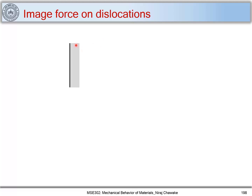Let's consider this surface of a material. This surface will exert a force on dislocations which are near to it. Let's consider the coordinate axis to be in this way, that is x and y, and let us consider a screw dislocation — a right-hand screw dislocation whose dislocation line is perpendicular to the screen. This surface will exert a force on this screw dislocation because the surface or the region near the surface is compliant.